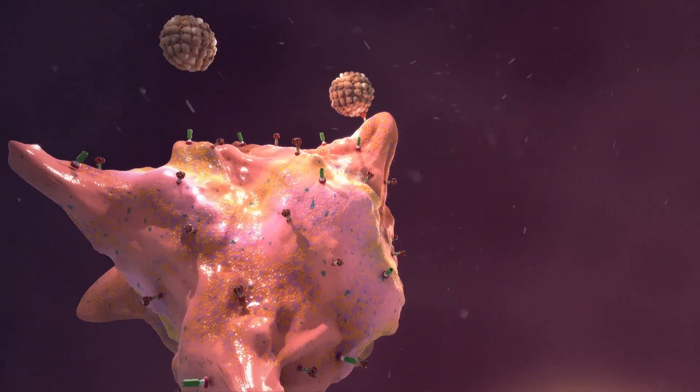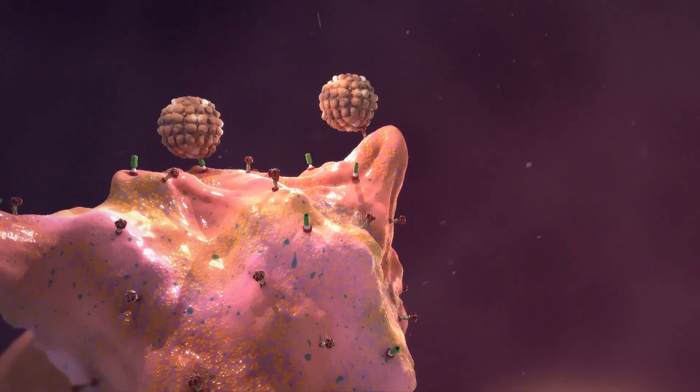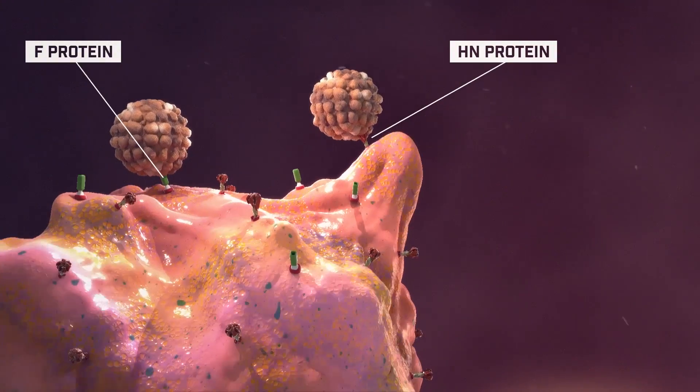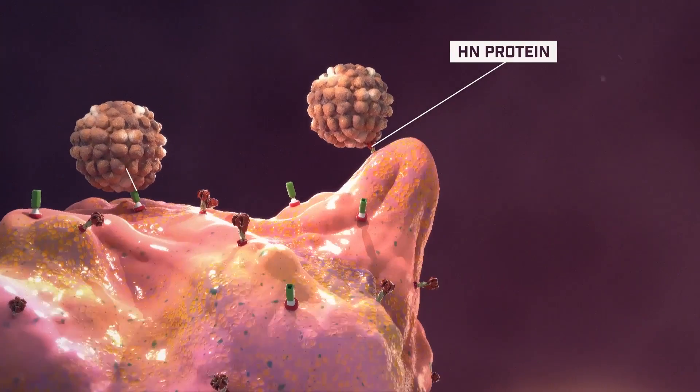The Newcastle virus HN and F proteins play an important role in the induction of protective immune response and they are present on the surface of the macrophages.